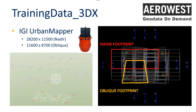The demo data used today comes from Aerovest — we thank them for providing it. It was flown with an IGI Urban Mapper, which has a very large-scale long footprint for the Nadir part: 28,200 pixels by 11,500 pixels for the Nadir camera.